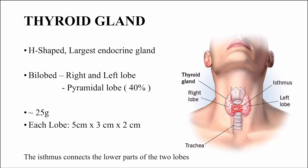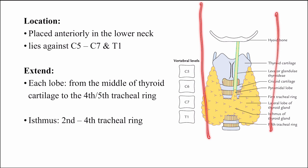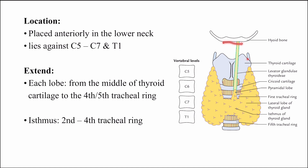The isthmus connects the two lobes of the thyroid gland. It is located in the lower part of your neck. You can see the hyoid bone, the thyroid cartilage, the cricoid cartilage, and then the tracheal rings. The thyroid gland extends from the vertebral level of C5 to T1 — the same as the brachial plexus. It extends from the oblique line of the thyroid cartilage till the 4th or 5th tracheal ring.